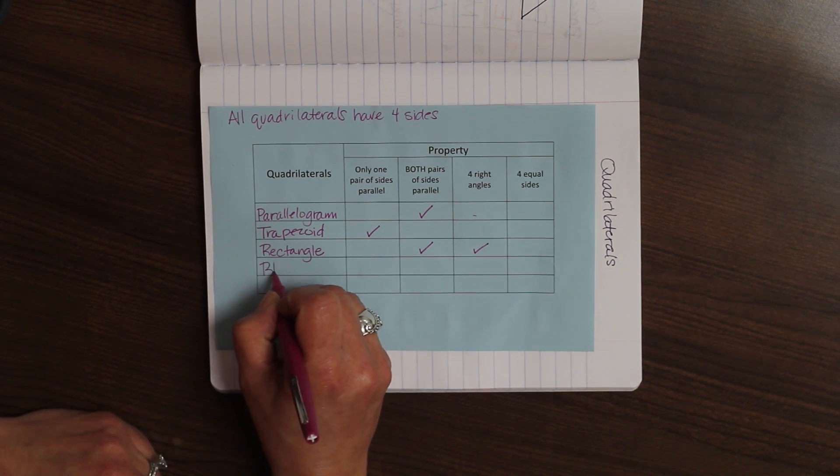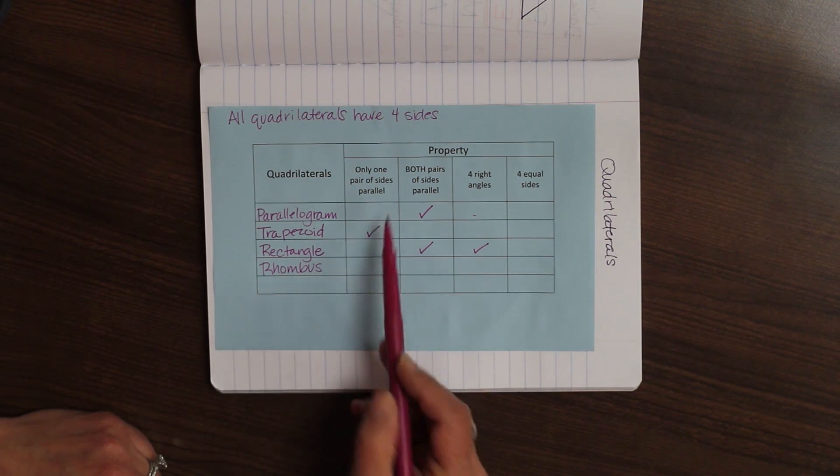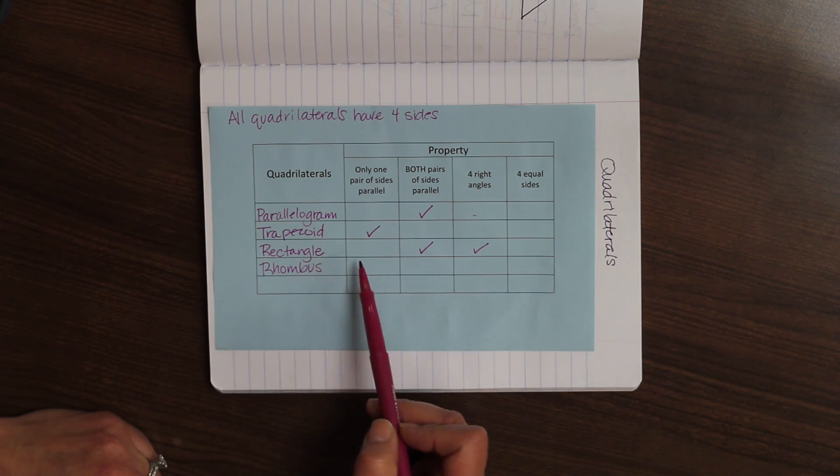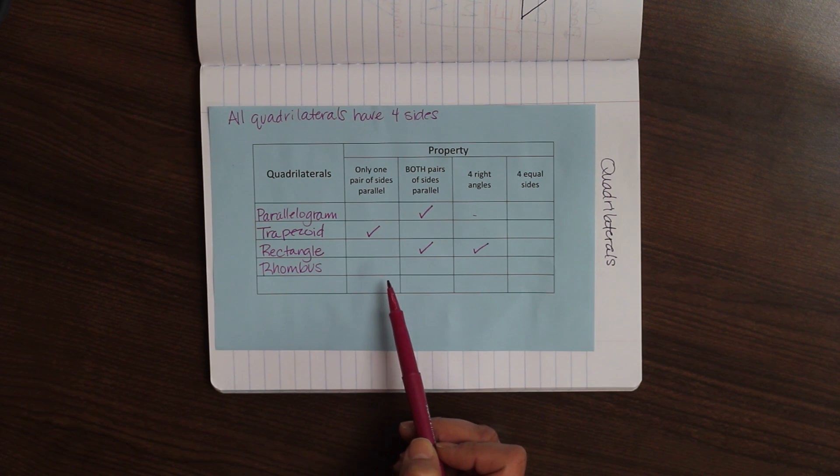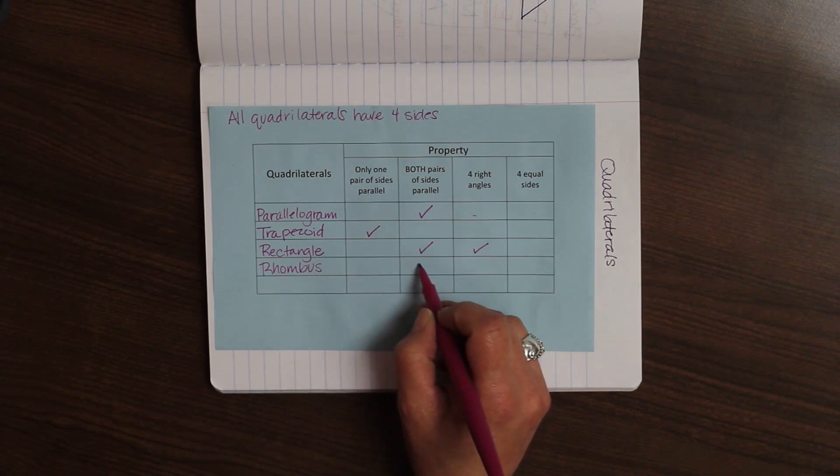We're going to talk about the rhombus. And on a rhombus, only one pair of sides is parallel. That's not true. Because remember I said, remember it as a square that's been hit by a bus? Now it's all crooked. Both pairs of sides are parallel? Yes. That is true.